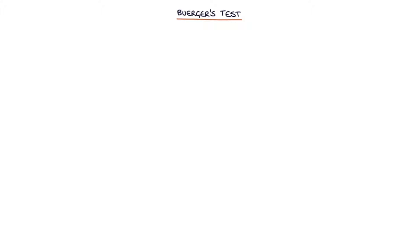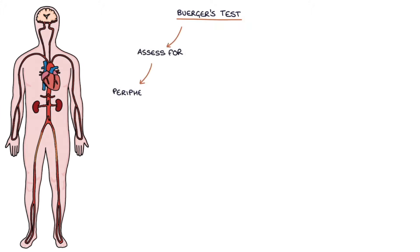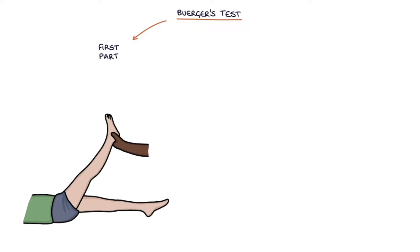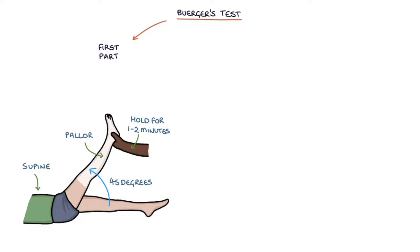Buerger's test is used to assess for peripheral arterial disease in the leg. The first part involves lying the patient supine, lifting the patient's legs to an angle of 45 degrees at the hip one at a time, holding them in that position for 1 to 2 minutes, and looking for pallor in the leg. If the leg goes pale, this indicates the arterial supply is not adequate to overcome gravity and suggests peripheral arterial disease.